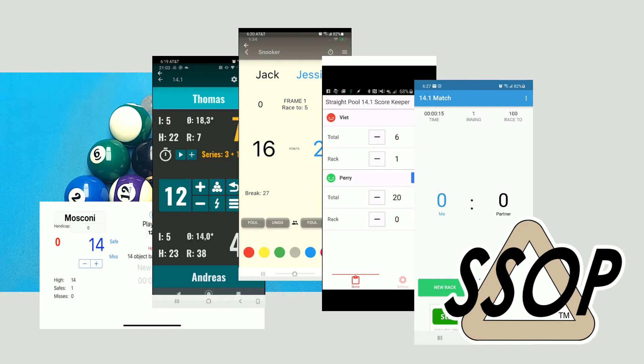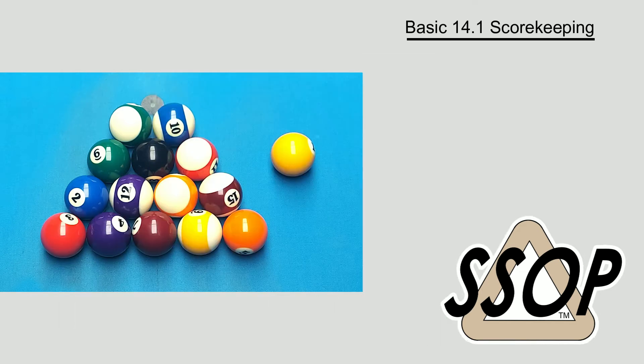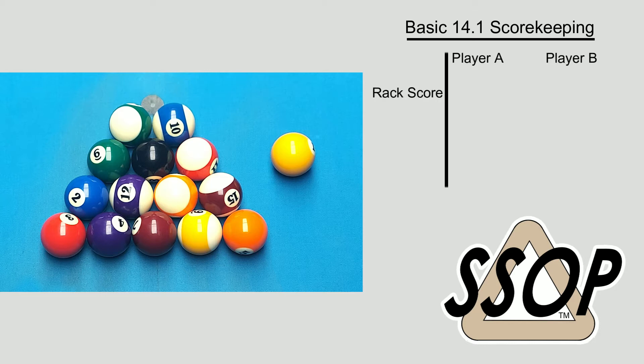No matter what system you use, you need to understand the basics. Straight pool scorekeeping involves tracking two scores for each player: the rack score and the game or total score. The rack score is each player's points for each individual rack, while the total score is each player's cumulative rack scores.